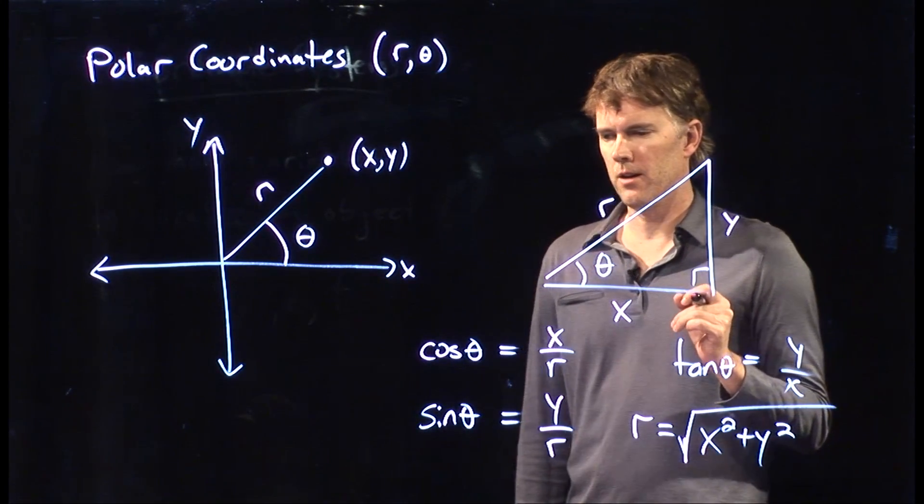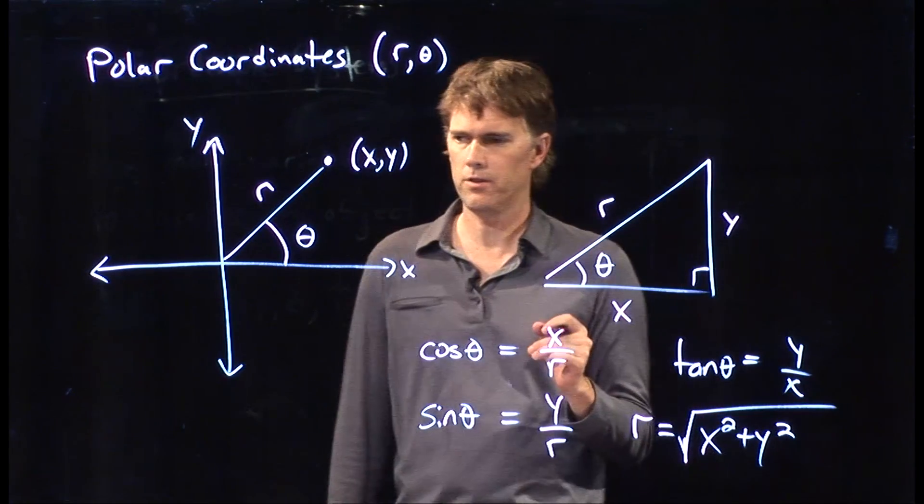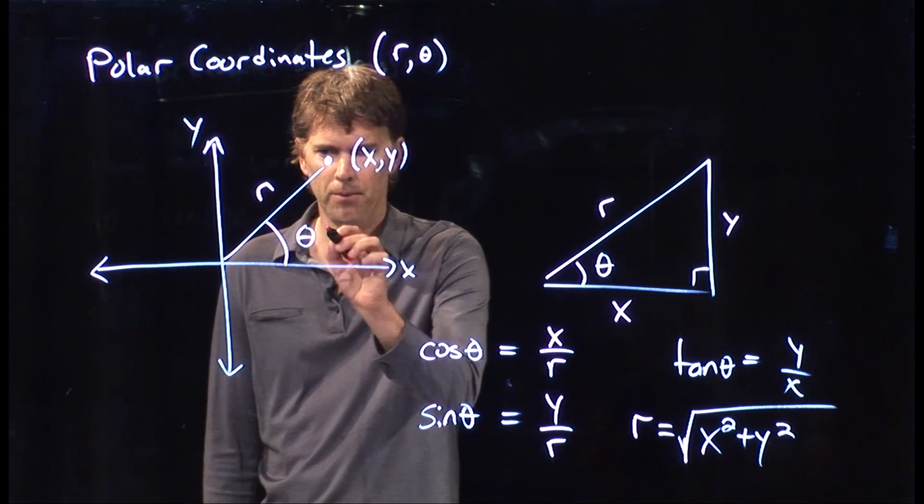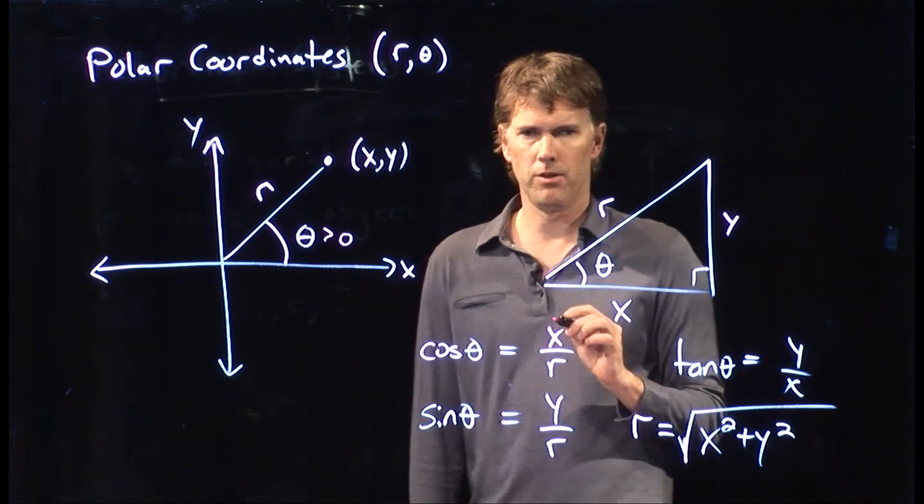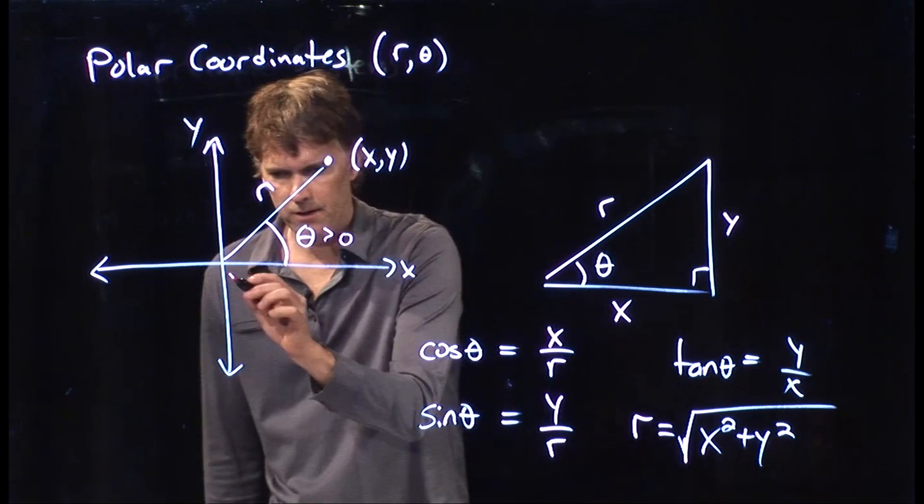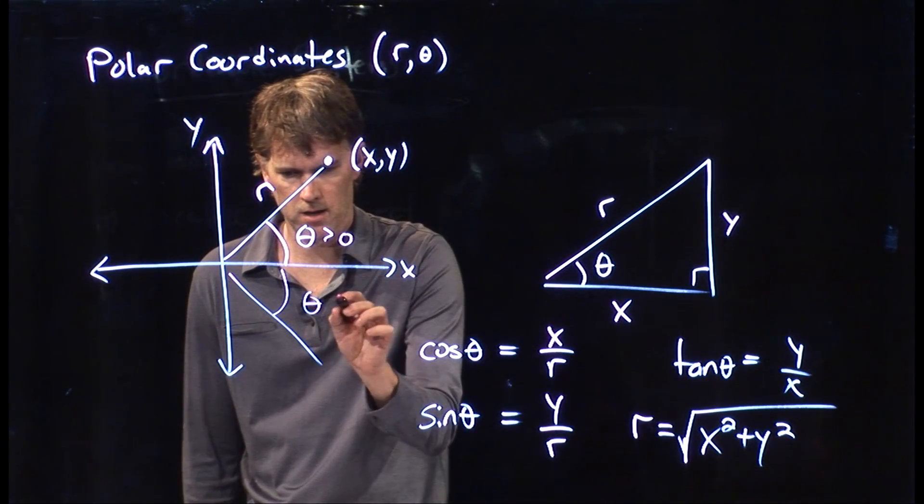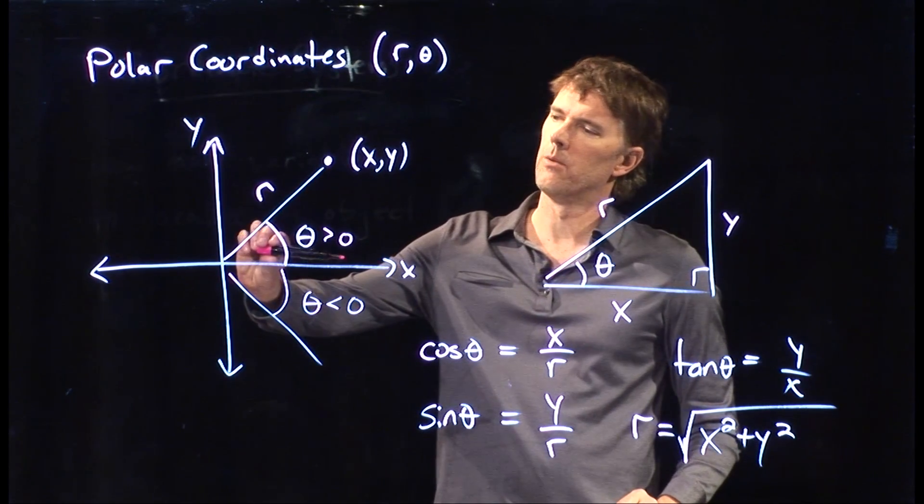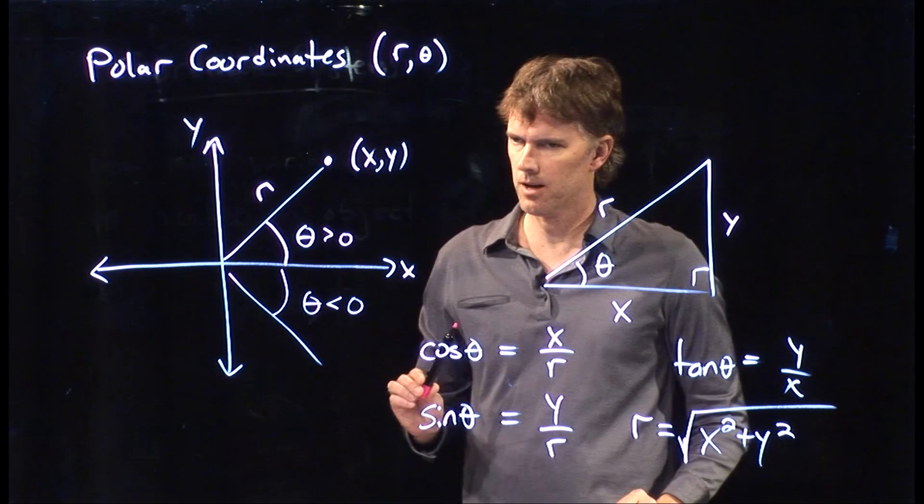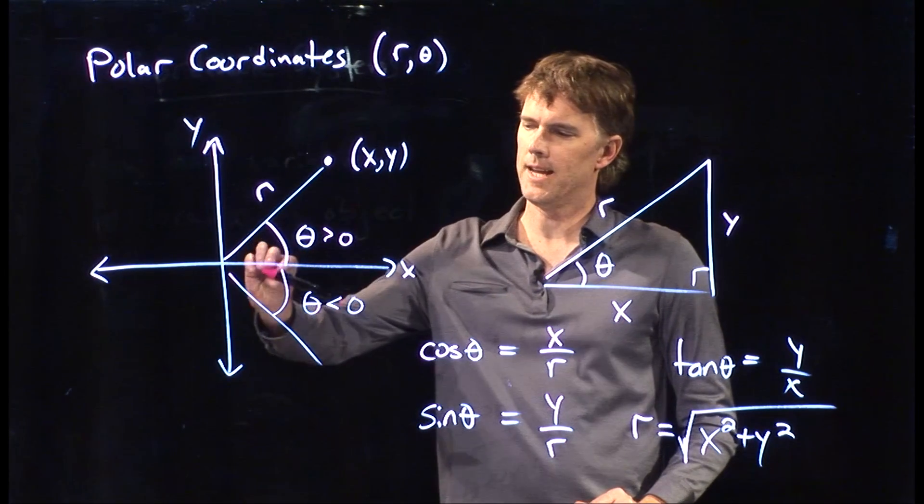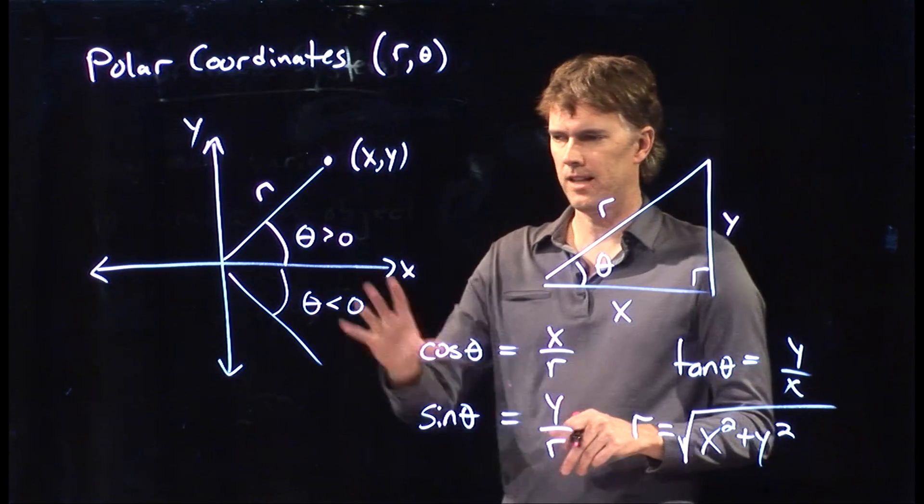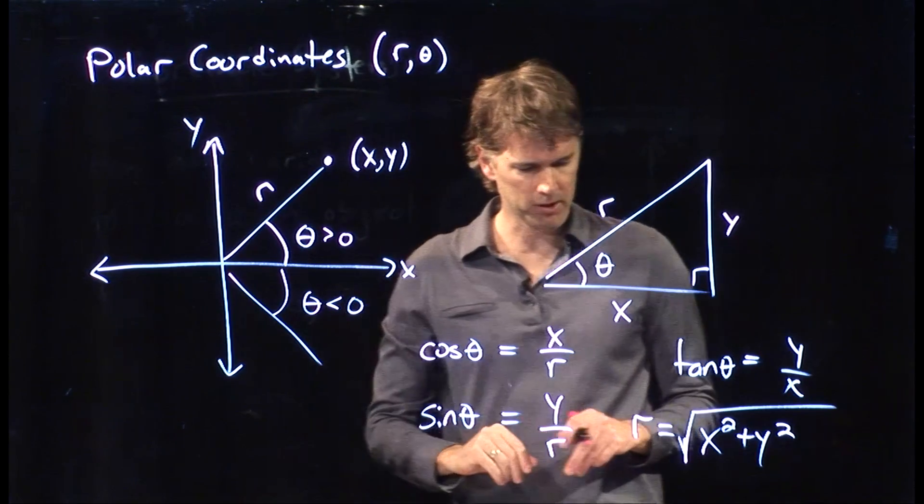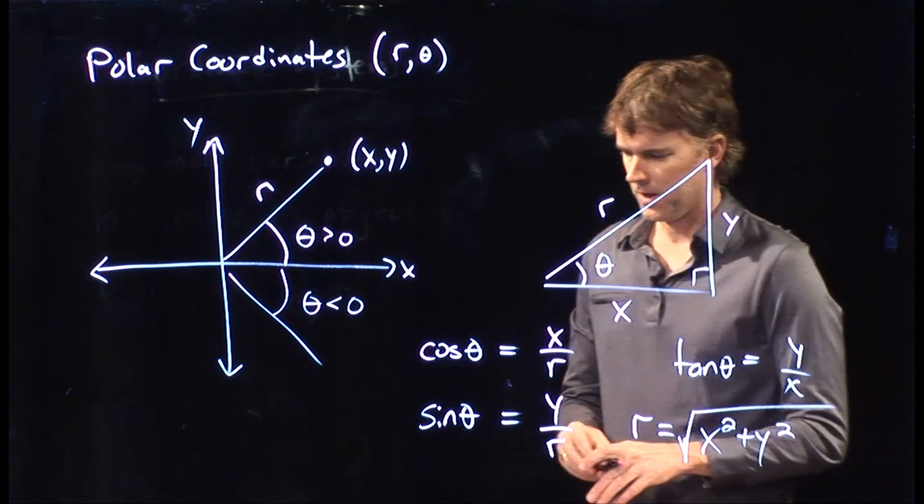Now, there is also a very nice sign convention that we have, which is the following. Thetas that are going up are bigger than zero. Thetas that are going the other way are less than zero. Namely, if you are rotating counterclockwise, that's positive. If you're rotating clockwise, that's negative. Now, this is just a convention. We're not always going to use that. But that is the typical convention for these signs.